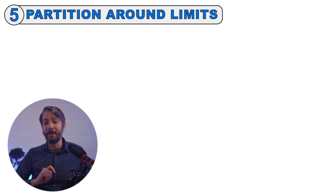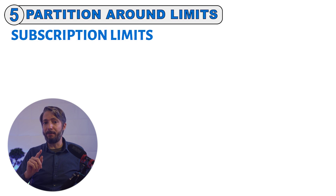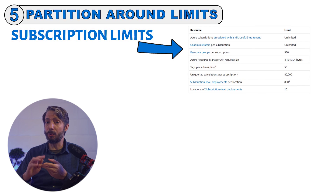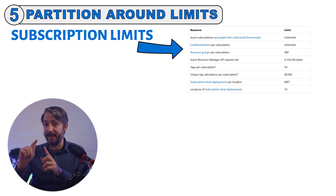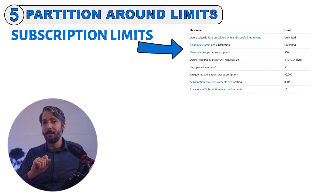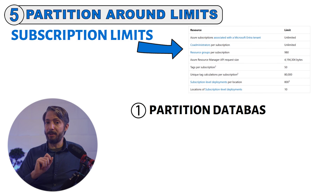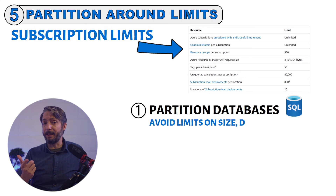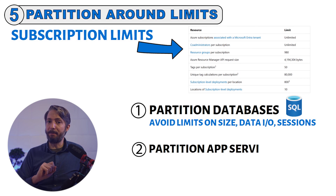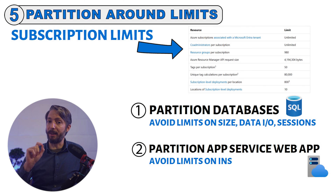That brings us to point number five: partition around limits. All services in the cloud have limits, and specifically for Azure, always review the subscription limits, quotas, and constraints. I have personally seen customers hit subscription limits even when they created a dedicated subscription just for a specific application. There are many ways to partition a system, but the two most important ones are: partition databases to avoid limits on database size, data I/O, or the concurrent number of sessions; and partition an app service web app to avoid limits on the number of instances per app service plan.